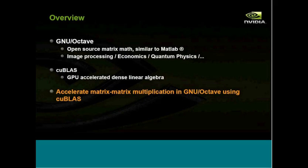For those of you not familiar with GNU Octave, it's a high-level numerical analysis application used in a great number of fields. By way of comparison, it is somewhat similar to MATLAB, which is already extensively accelerated using GPUs. Specifically, we will accelerate GNU Octave on the GPU using the CUDA version of the BLAS library. BLAS stands for Basic Linear Algebra Subprograms and is a collection of routines to manipulate dense matrices. CUBLAS is the BLAS library ported to the GPU.